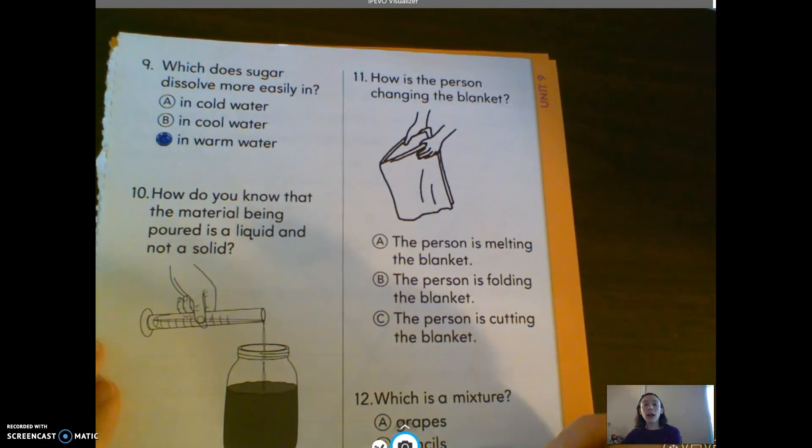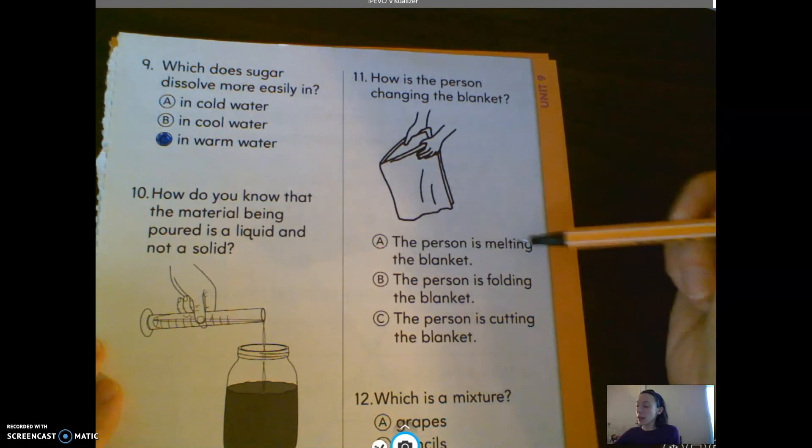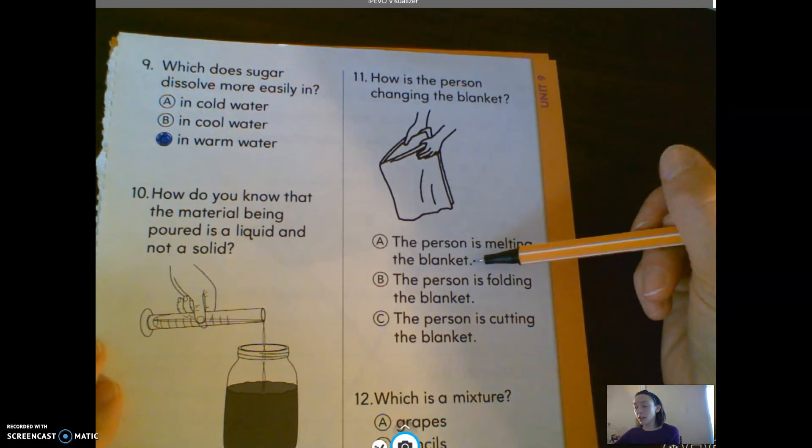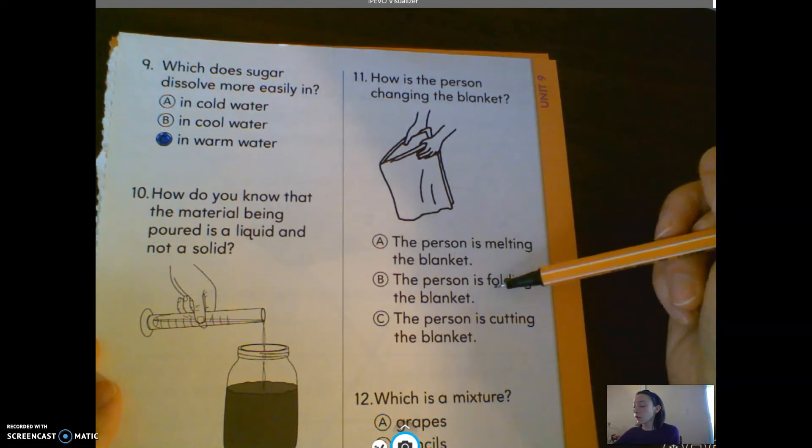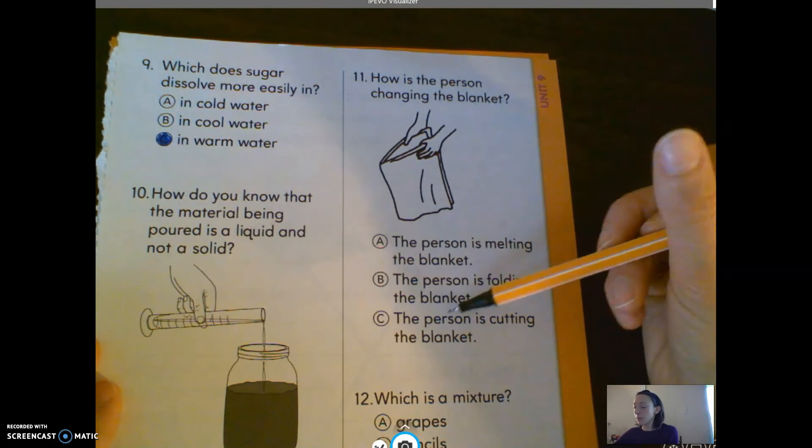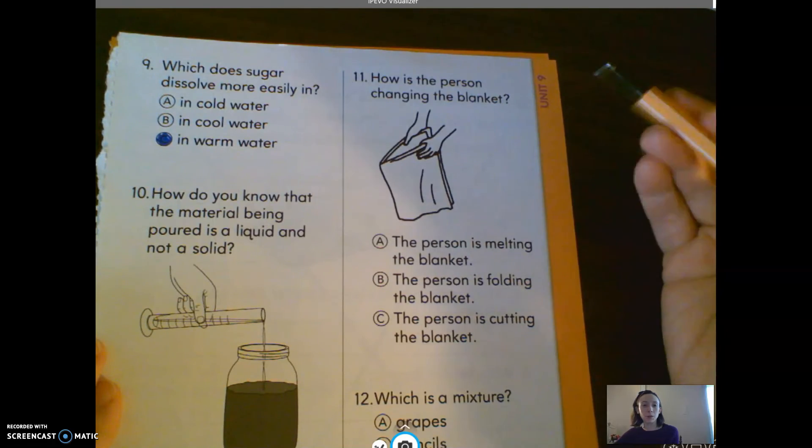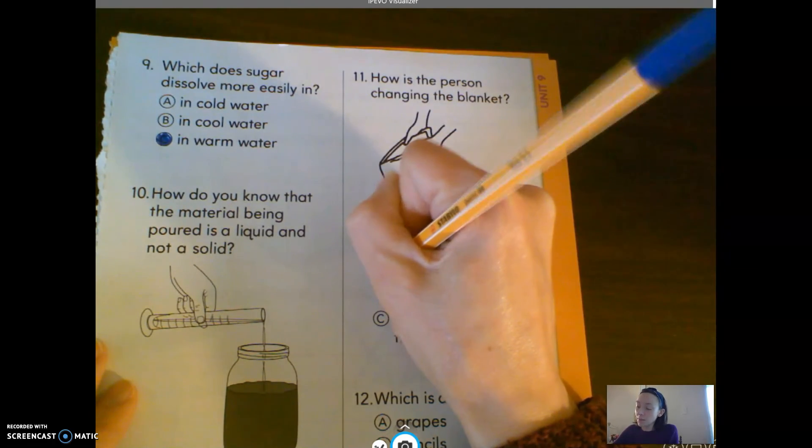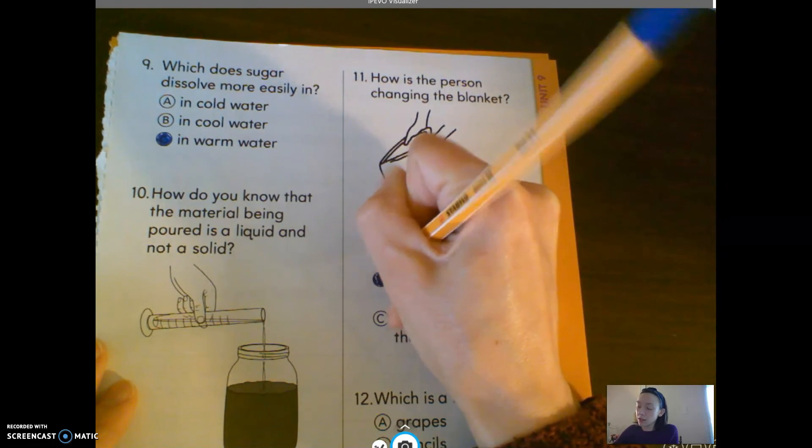Number 11: how is the person changing the blanket? A, the person is melting the blanket. Doesn't look like it. B, the person is folding the blanket. Or C, the person is cutting the blanket. Well, they are definitely folding it. They're not melting it or cutting it. Thank goodness.